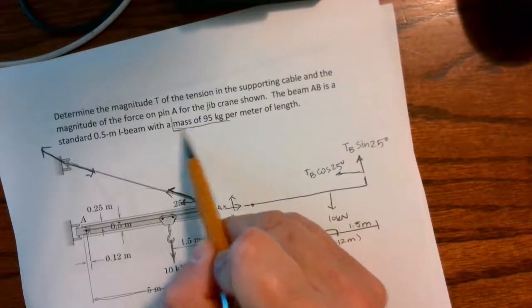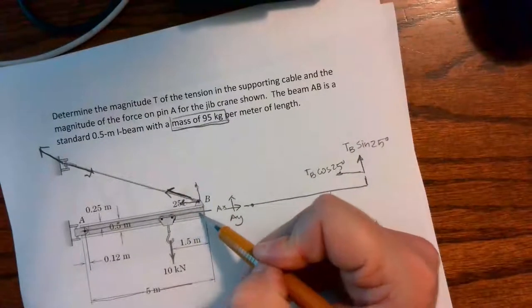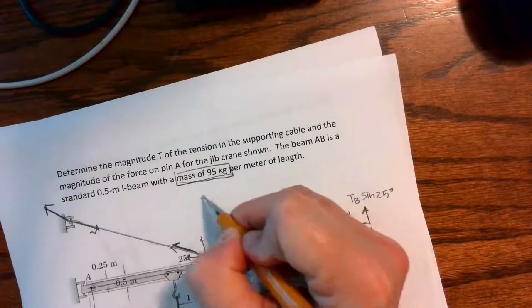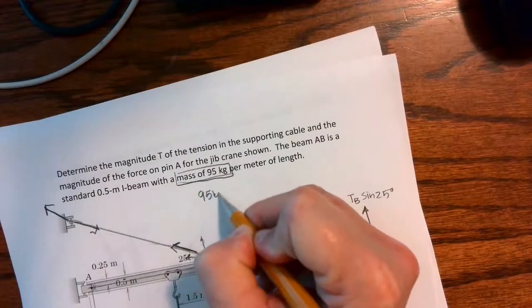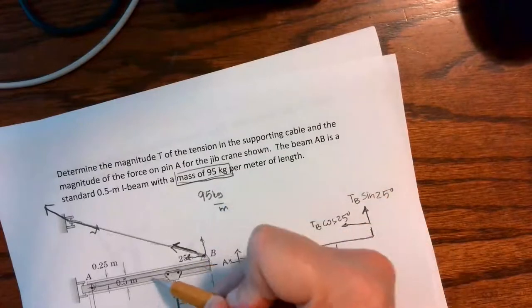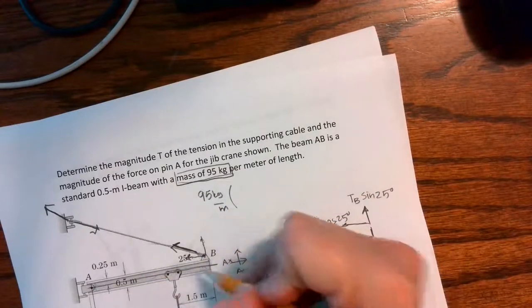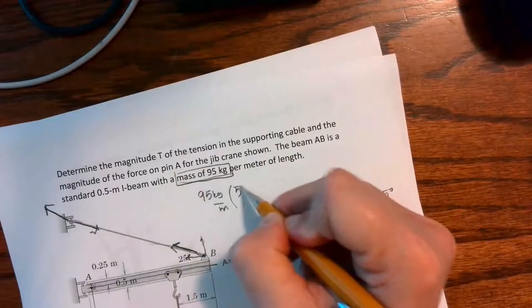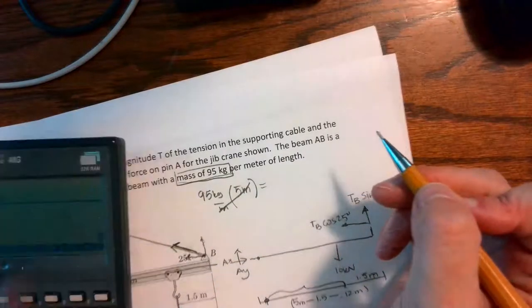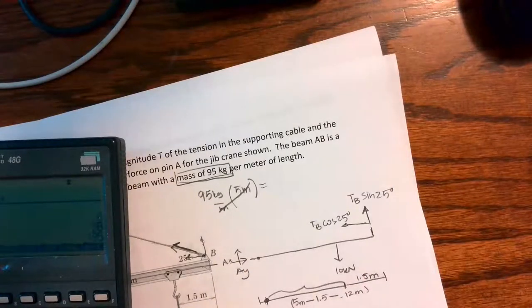The other thing I need to take into account is the weight of this beam. If it is 95 kilograms per meter and I need the force of this beam, then I can multiply it by 5 meters and I'm left with 95 times 5, which is 475 kilograms.